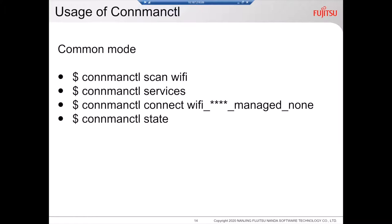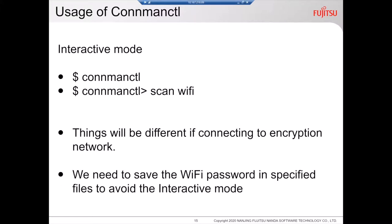ConnMan also provides an interactive mode. If we need to connect to a Wi-Fi signal with a password, we need to use the interactive mode. But if we want to use a shell script to automate the connection process and avoid the interactive mode without using advanced shell script techniques, we can save the Wi-Fi password in ConnMan config files to avoid the interactive mode.